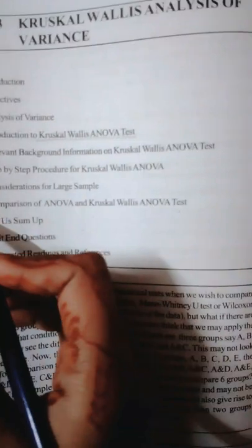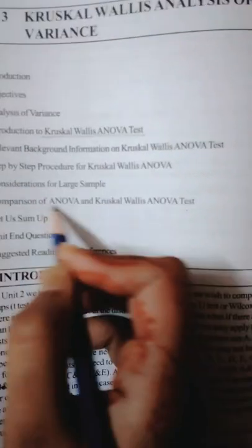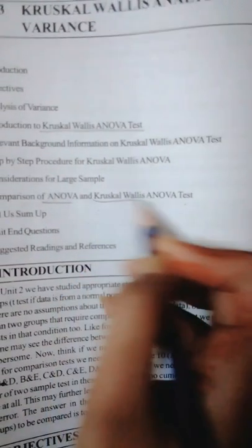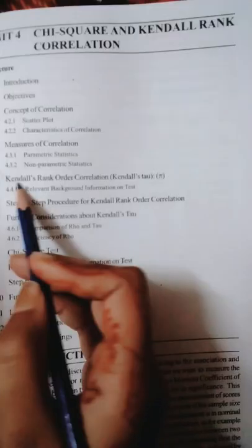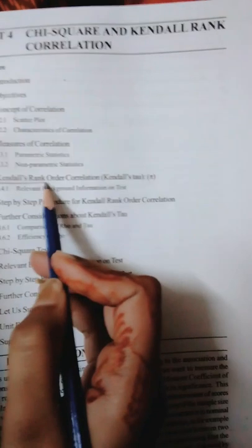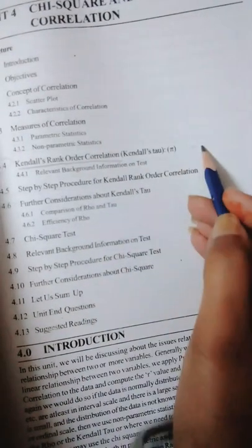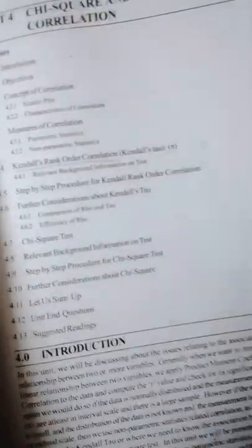And this one also: comparison of ANOVA and Kruskal-Wallis ANOVA. And from the last chapter you can read this for theory: Kendall's tau order correlation. This can come for either three marks or as a numerical.